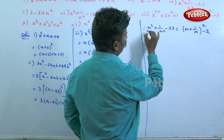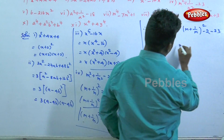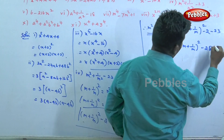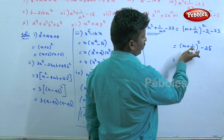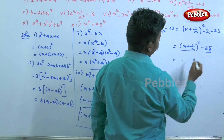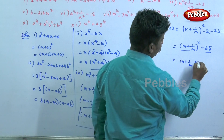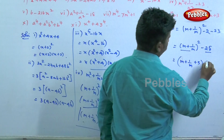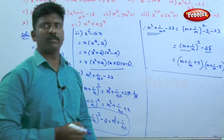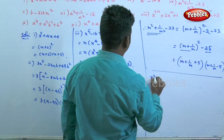So m plus 1 by m whole square minus 25. This is of the form a squared minus b squared, which equals a plus b into a minus b. So the factors are m plus 1 by m plus 5 into m plus 1 by m minus 5. These are the factors.